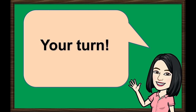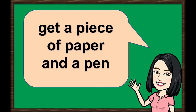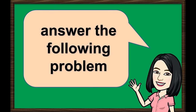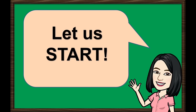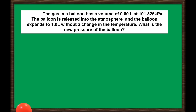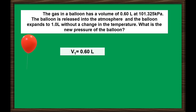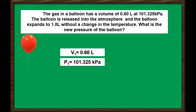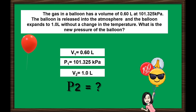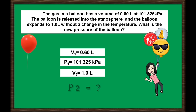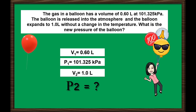Now it's your turn to answer a problem. Get a piece of paper and a pen. Here is the problem: The gas in a balloon has a volume of 0.60 liters at 101.325 kilopascal. The balloon is released into the atmosphere and expands to 1.0 liters without a change in temperature. What is the new pressure of the balloon? You may pause this video as you answer the problem.